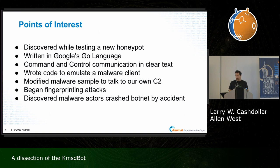One of the things we noticed with this botnet is that the command and control structure is in clear text, which made it a lot easier to reverse engineer. I wrote some code to emulate the malware client so that I could talk to the C2, and then I modified the malware itself to talk to our own C2 so we could direct commands and analyze the attack traffic. And then the malware actors actually crashed the botnet themselves — we'll get into that too.